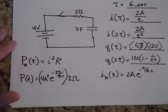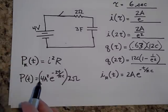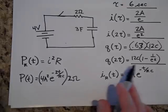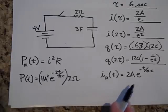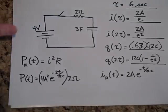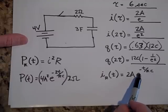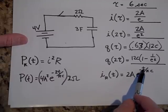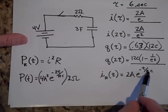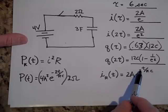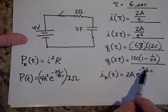The equation for power is I squared times R, so you take the whole current term and square it. When you square an exponential function, e to the negative t over RC squared just means you put a 2 up in the exponent, giving e to the negative 2t over RC.